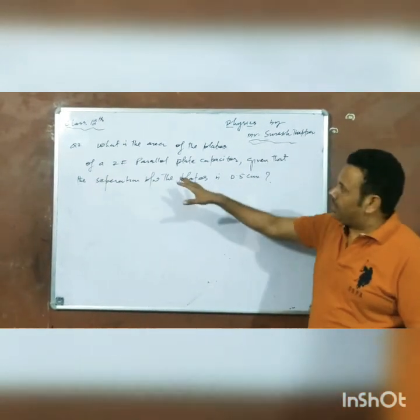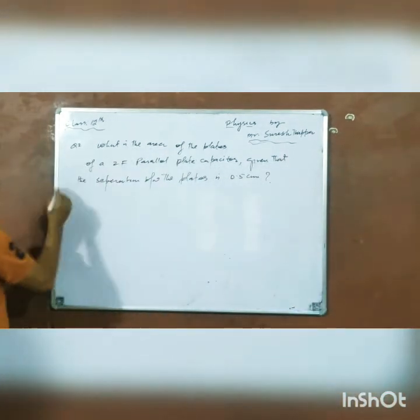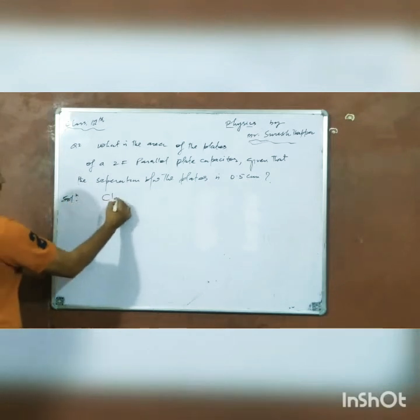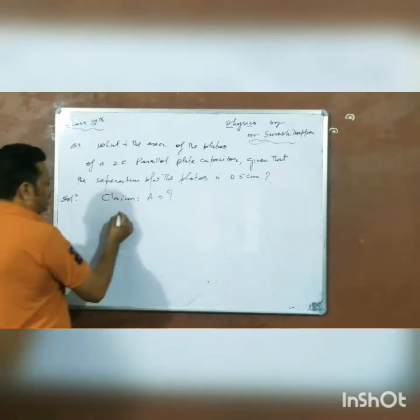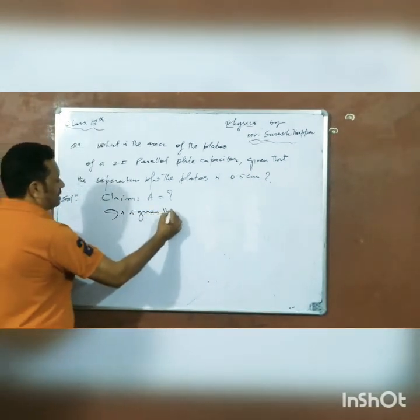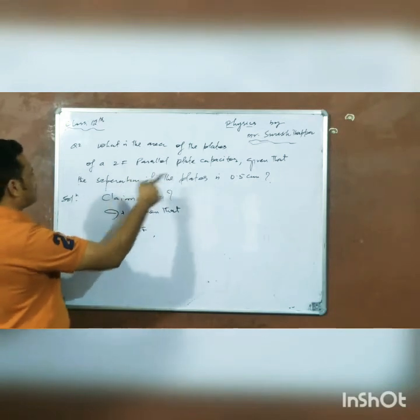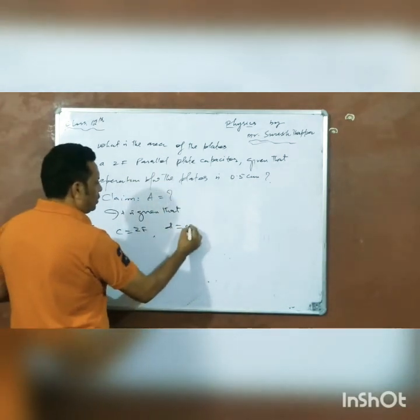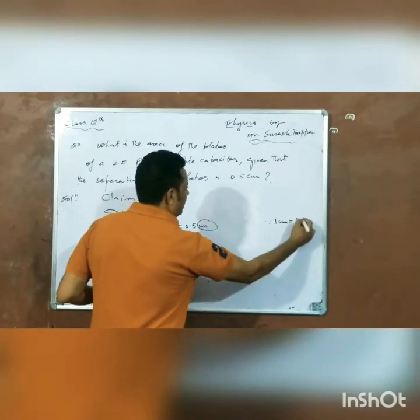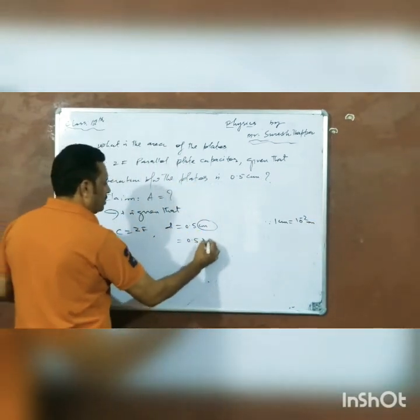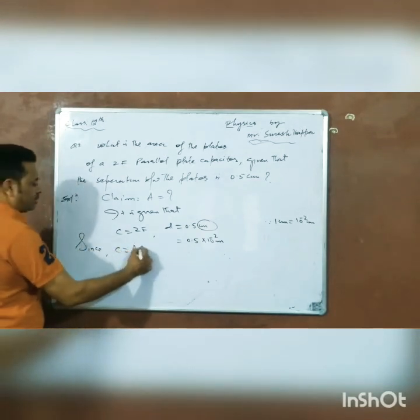The second problem asks: what is the area of the plates of a parallel plate capacitor given that the separation distance is 0.5 cm? If we have centimeter, 1 cm equals 10 to the power minus 2 meter, then it is 0.5 times 10 to the power minus 2 meter.